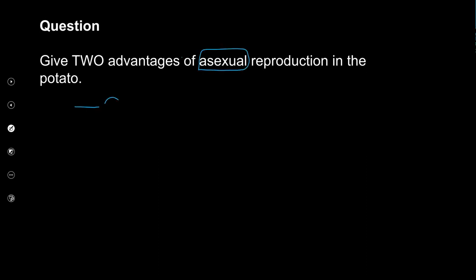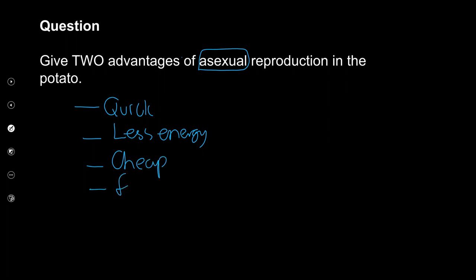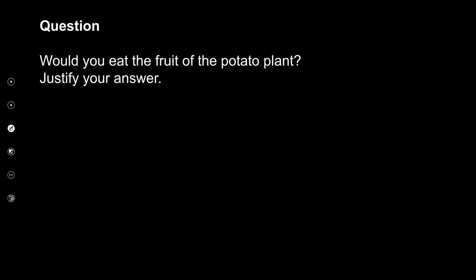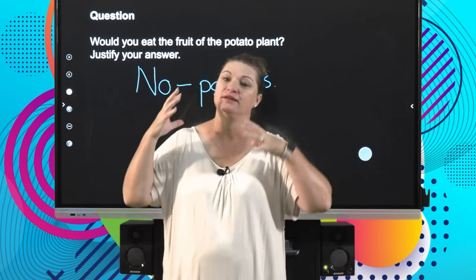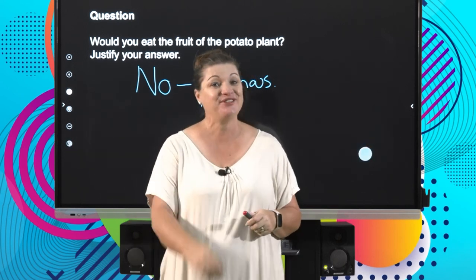Give two advantages of asexual reproduction in the potato: it's quick, it's less energy, it's cheap, favorable traits can be passed on quickly — any two of those. The last question: would you eat the fruit? The answer was no — the fruit is poisonous. Okay, that is all we have for today. Make sure you know asexual reproduction — predictable — and sexual reproduction — who knows what we'll get! Until next time, cheerio, bye.